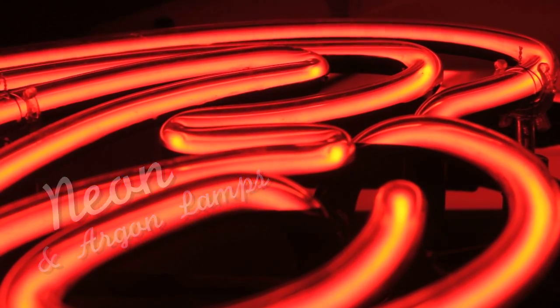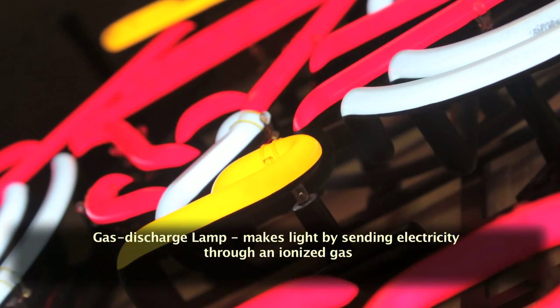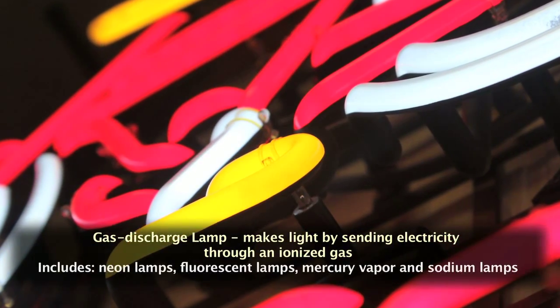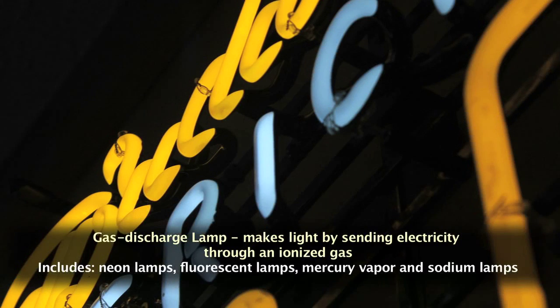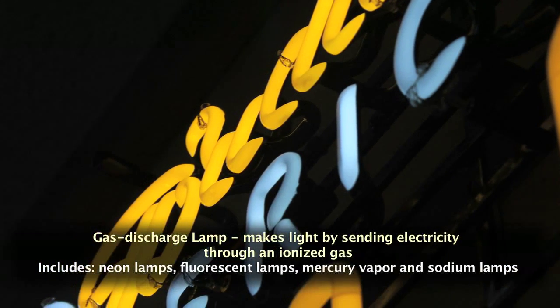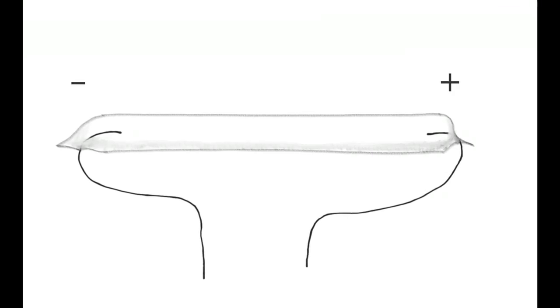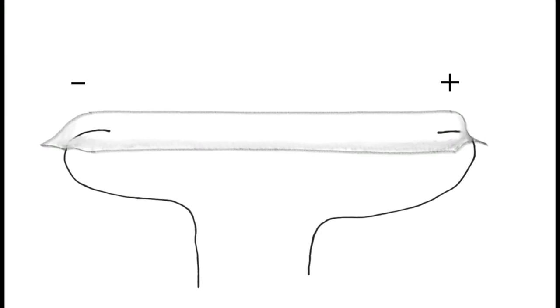Neon is another electric discharge light source in the same family as fluorescence, and it's a low-pressure discharge lamp. Neon tubes are basically just a glass tube with an electrode on each end, evacuated and filled with gas.